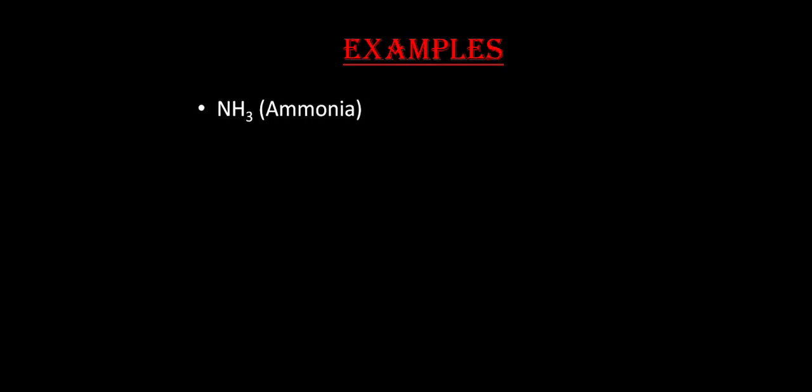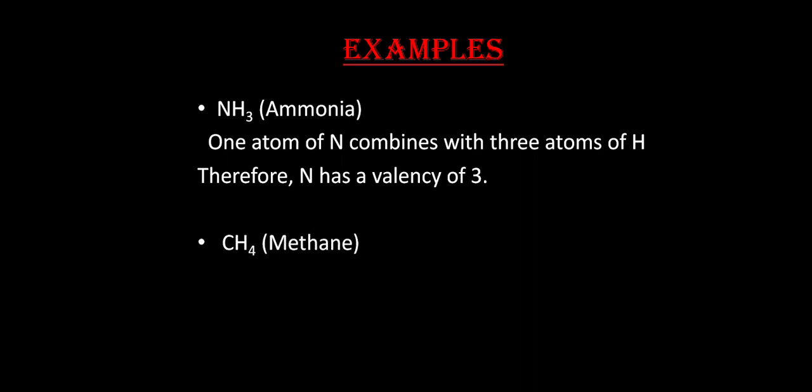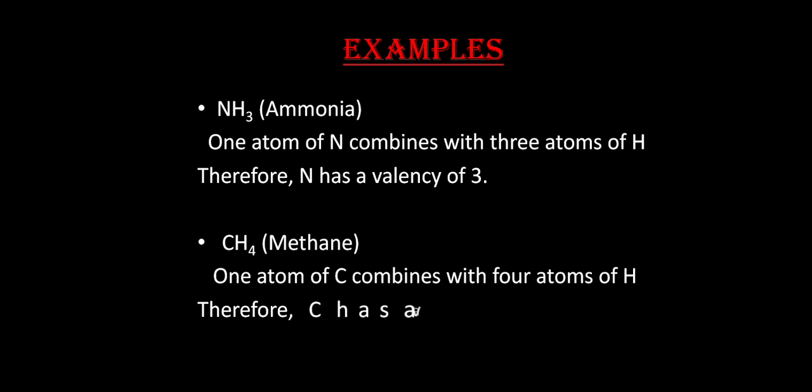For example, in NH₃, one atom of nitrogen combines with three atoms of hydrogen, so nitrogen has a valency of three. In methane (CH₄), carbon is combining with four hydrogen atoms, so the valency of carbon is four. We measure valency with respect to either hydrogen — same number — or oxygen — double the number.